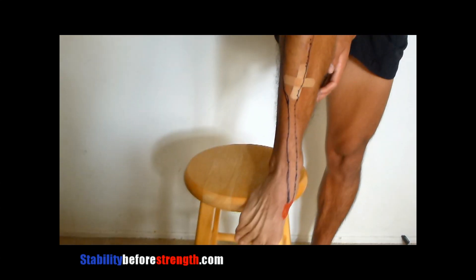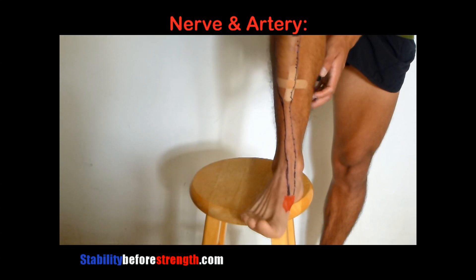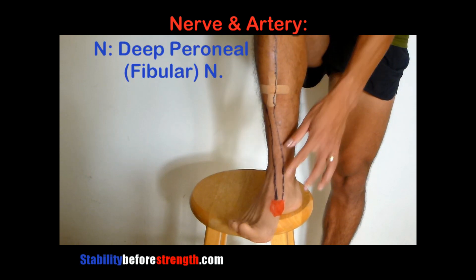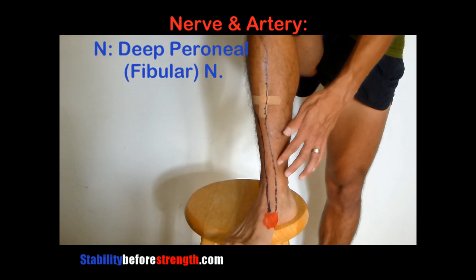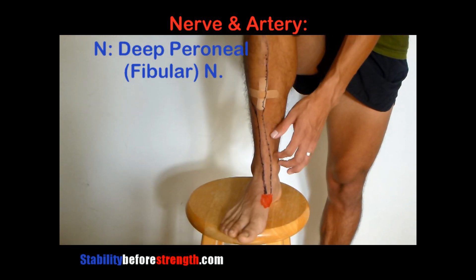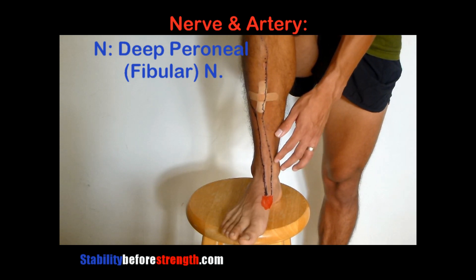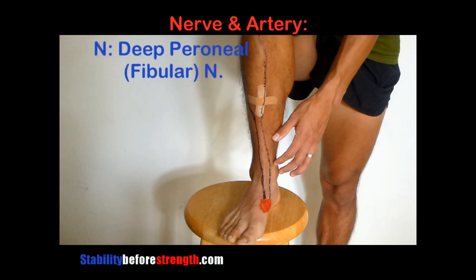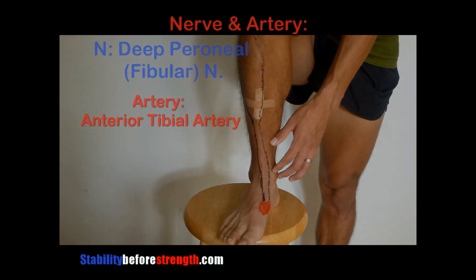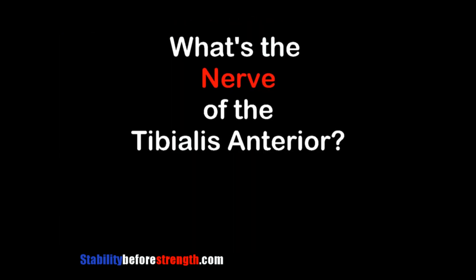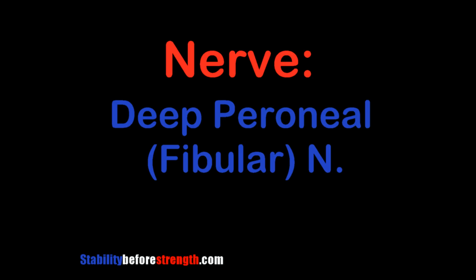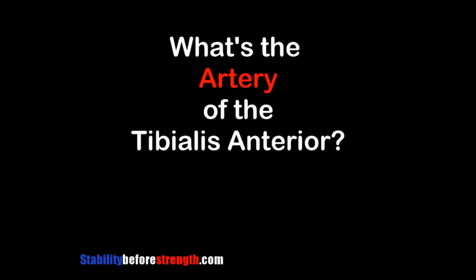The nerve that innervates the tibialis anterior is the deep peroneal or fibular nerve. The artery that brings blood to the tibialis anterior is the anterior tibial artery.